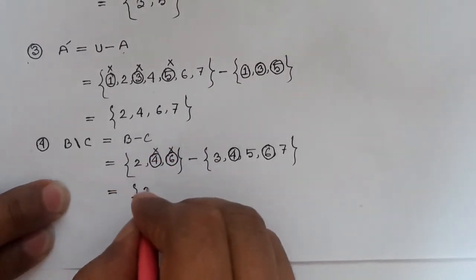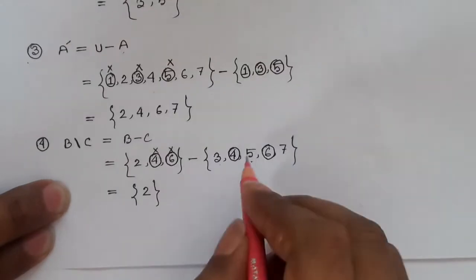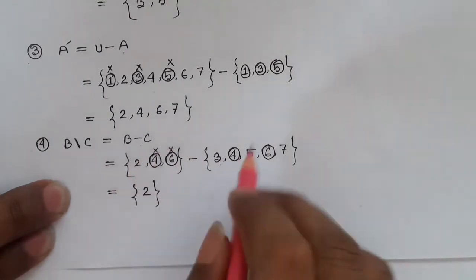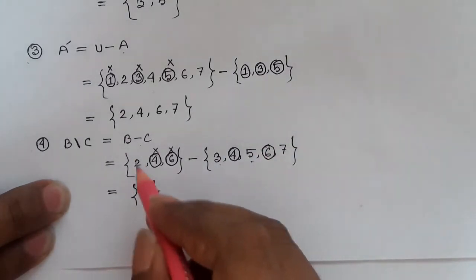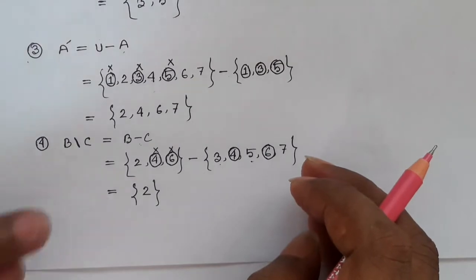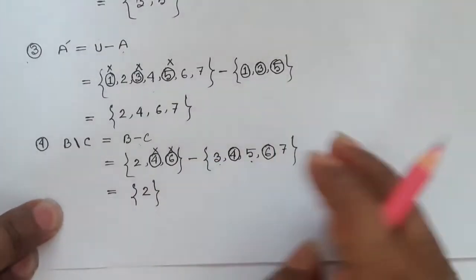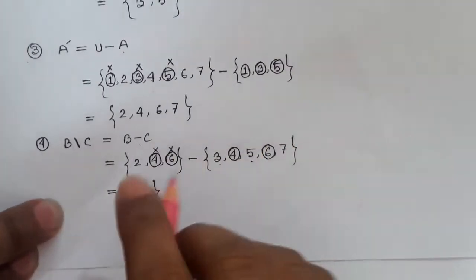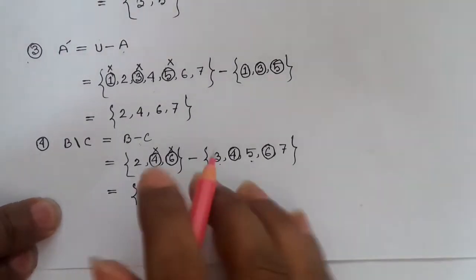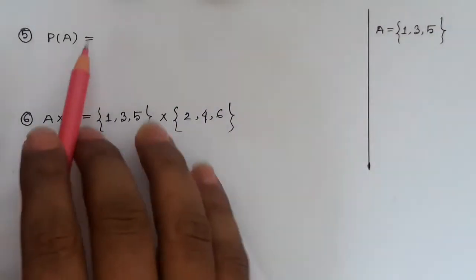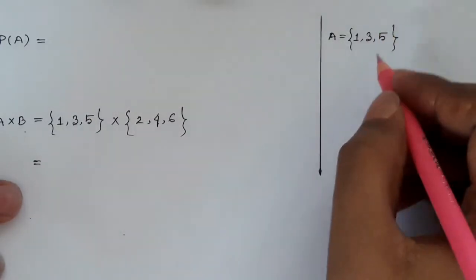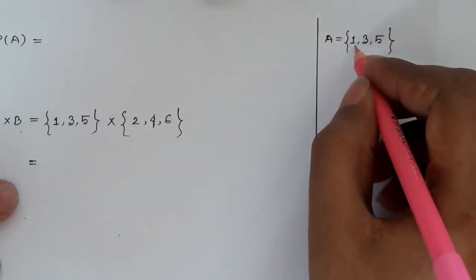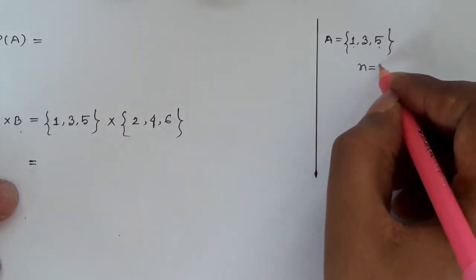The answer is 2. The power state — the answer is 1, 1. 3, 5. N equals 3.